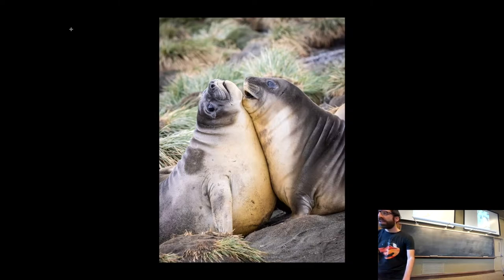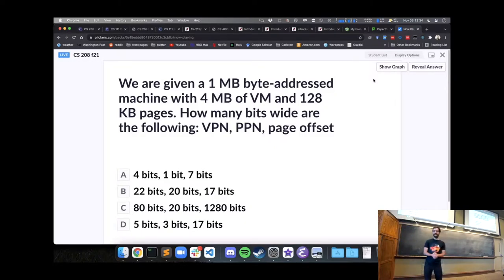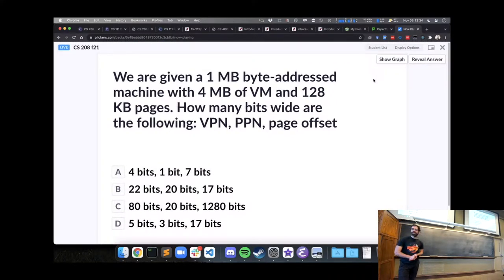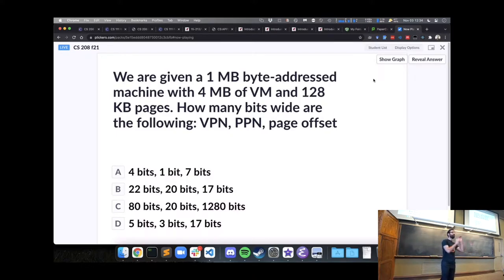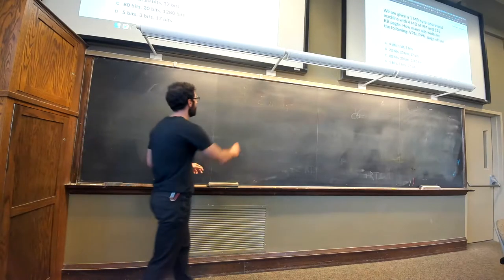Let's do a bit of practice with our virtual memory system before getting into the main topic for today. No cards on this one, but please work with your neighbors. Given that we have a one-megabyte byte-addressed machine — one megabyte of physical memory — four megabytes of virtual memory, and pages that are 128 kilobytes, figure out the sizes of the virtual page number, physical page number, and offset.